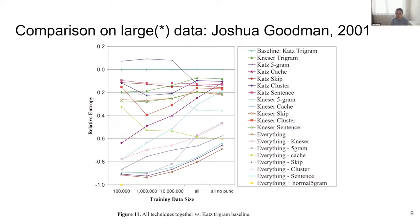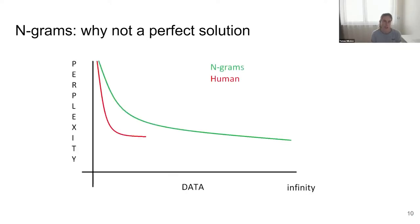That was quite a disappointing result at the time, and maybe 98% of the research community believed that with large amounts of data, language modeling research would be useless because everything would be beaten by n-grams. Today we know that was wrong, but I give this example to show that even when the scientific community believes something very strongly, it doesn't mean it will remain true forever.